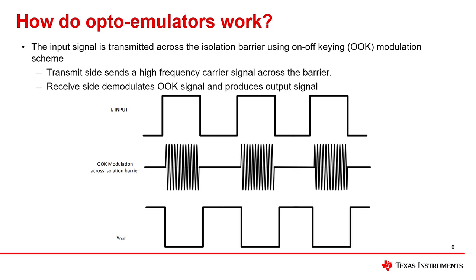in which the transmit side sends a high-frequency carrier signal that contains information on how much current is flowing through the input pins. The receiver side demodulates the signal after advanced signal conditioning and produces an output signal.